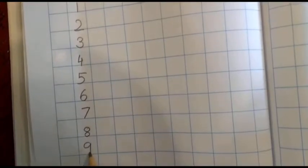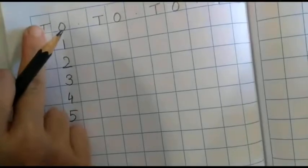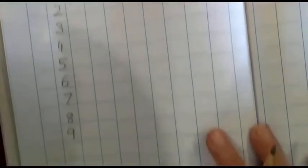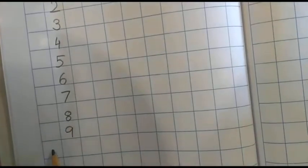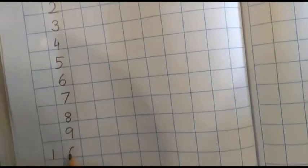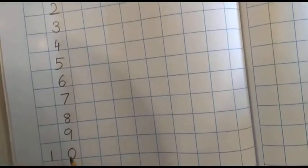Nine. Now two numbers will come, so one number will come in tens unit, the other number will come in ones unit. So here one zero ten, one will come in tens unit and zero will come in ones unit.